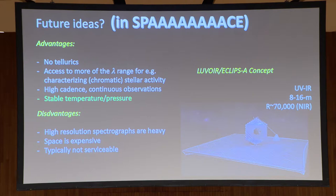Another future space-based mission with a high-resolution spectrograph is the ECLIPS-A instrument on the LUVOIR concept — again a UV to infrared instrument, either configuration A or B, with a resolution of 70,000 in the near infrared. These are some of the ideas for high-resolution spectrographs in space.